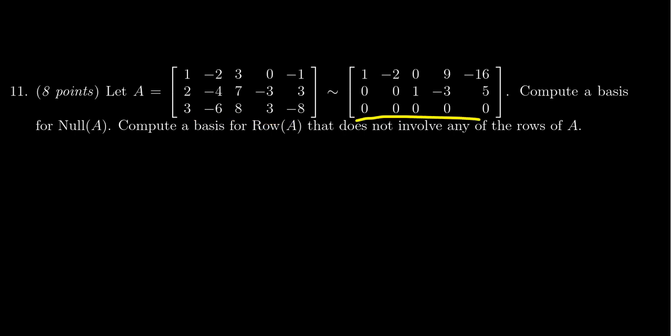We're also told that A is row equivalent to this matrix right here which we can see very quickly that this matrix is in echelon form. It's in fact row reduced echelon form and so we're asked to compute a basis for the null space and a basis for the row space of this matrix right here.